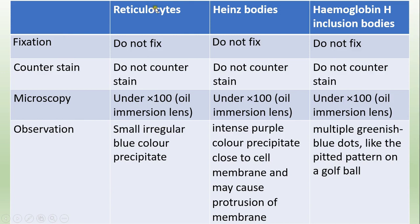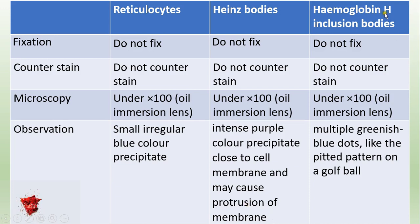All three inclusion bodies are observed under the microscope under oil immersion lens. Reticulocytes can be seen as small, irregular blue color precipitates. Heinz bodies can be seen as intense purple color precipitates — they can be near the membrane of the cell and may cause protrusions of the membrane. Hemoglobin H inclusion bodies can be seen as multiple greenish blue dots, which we call the golf ball appearance.